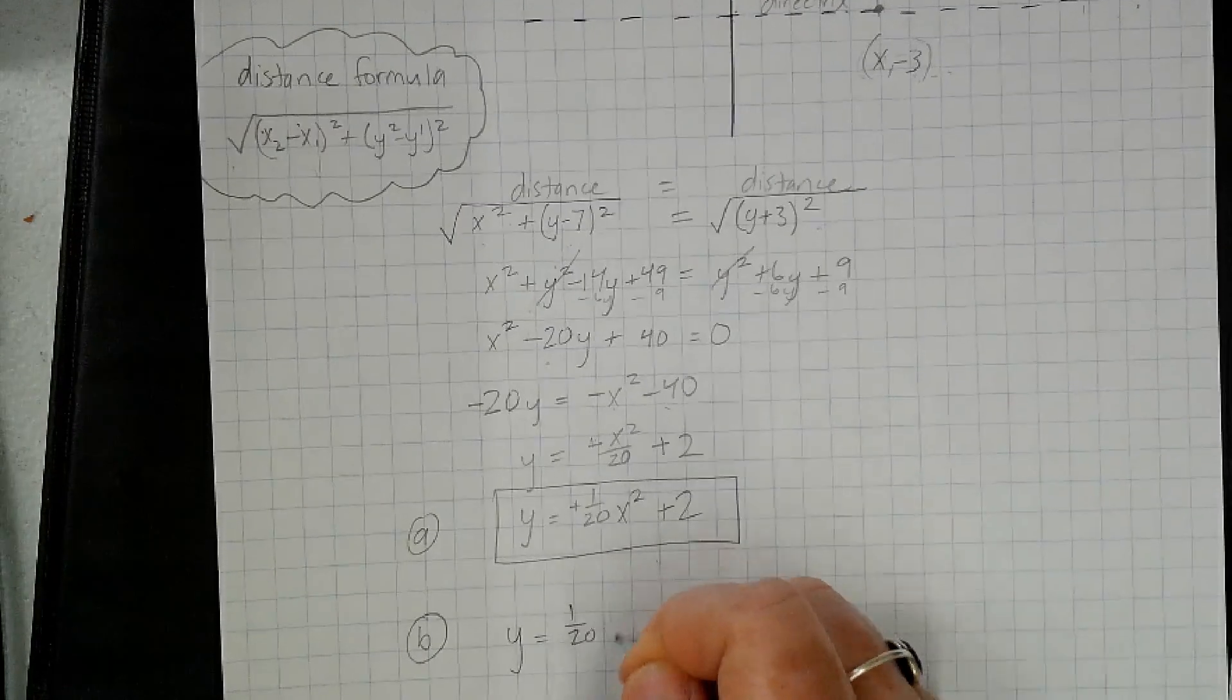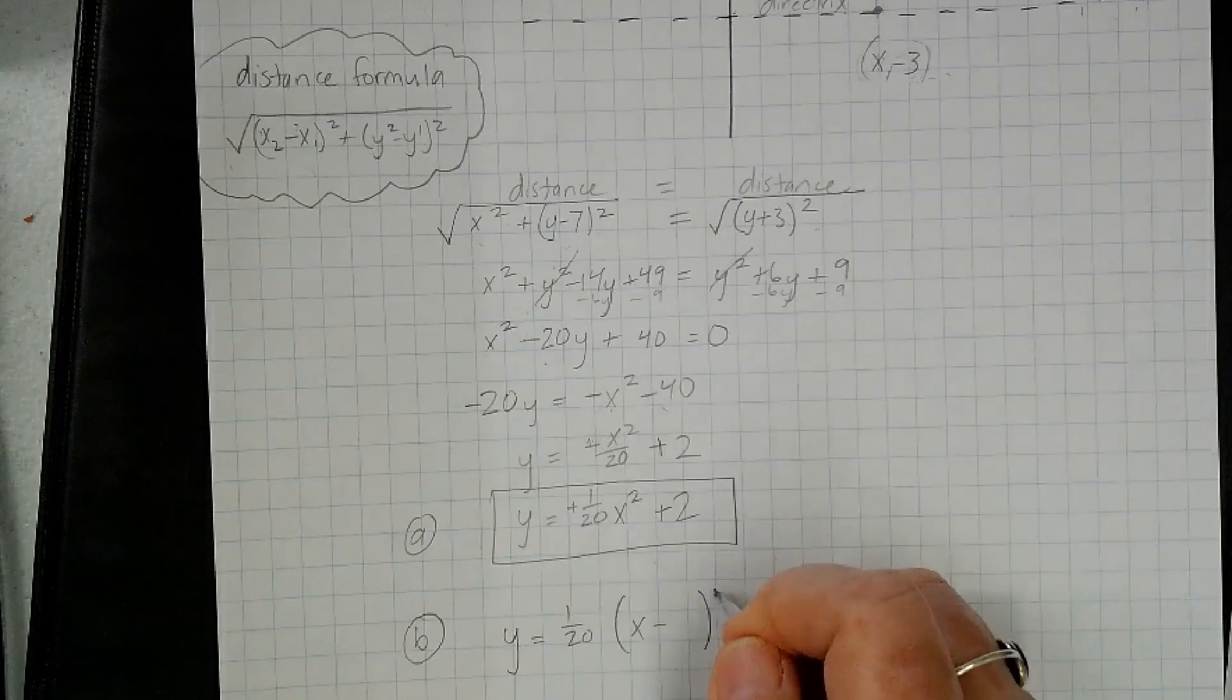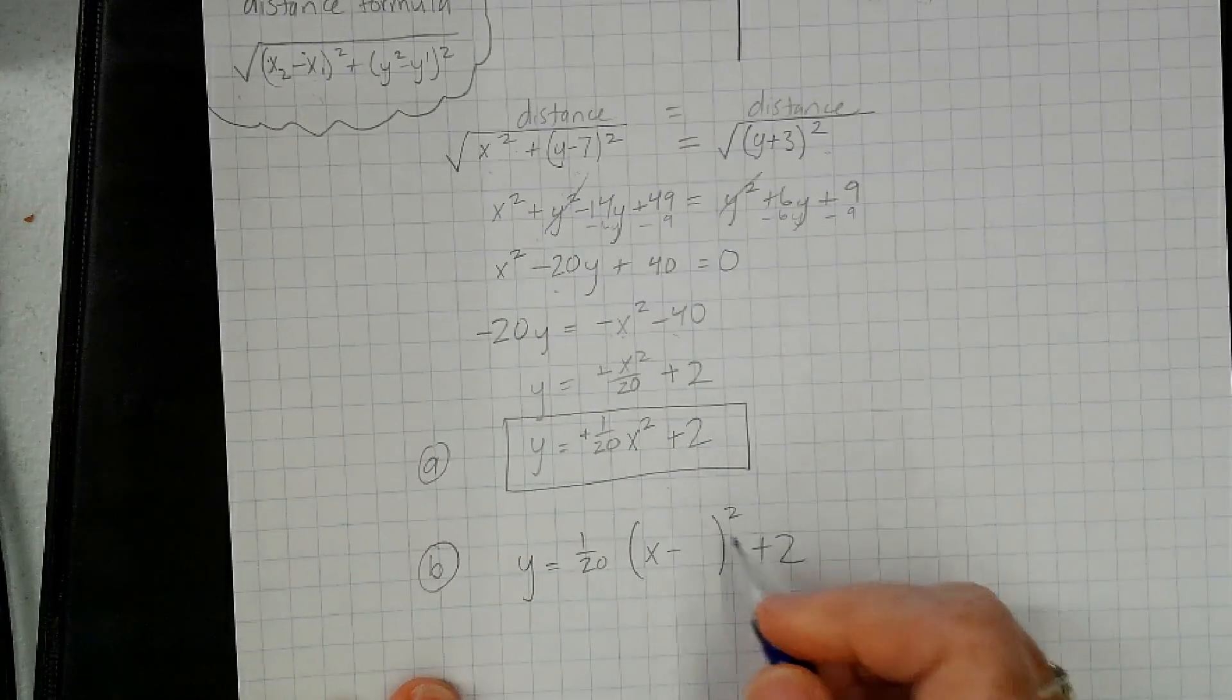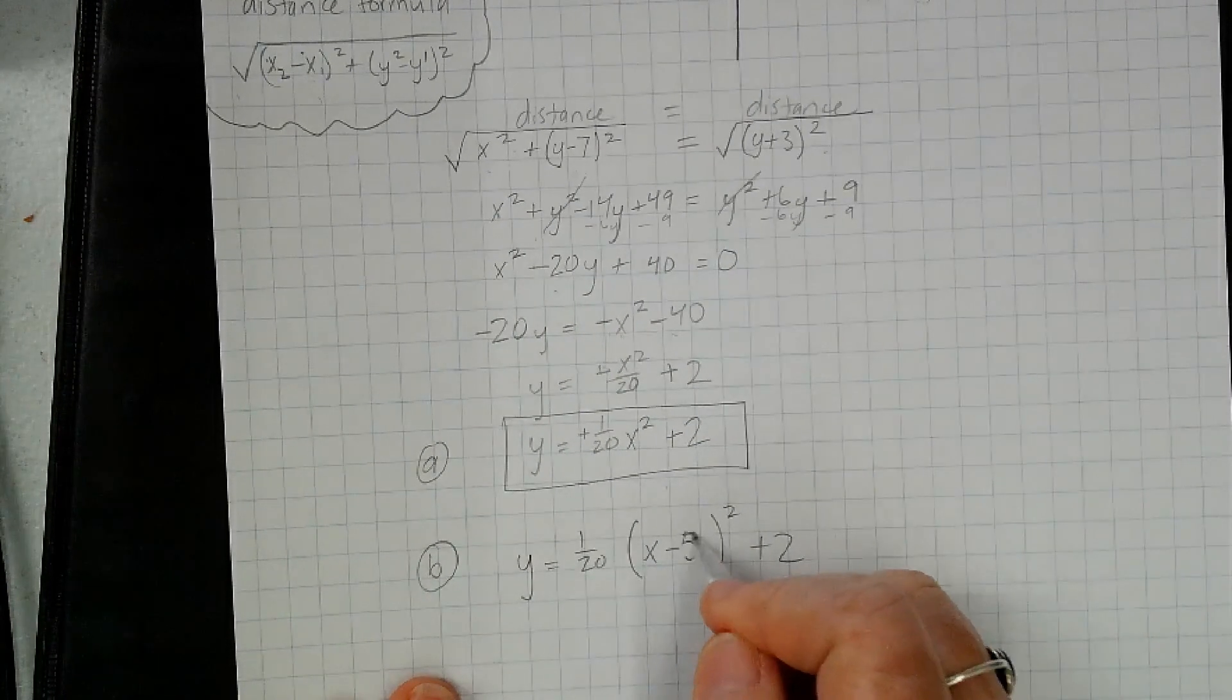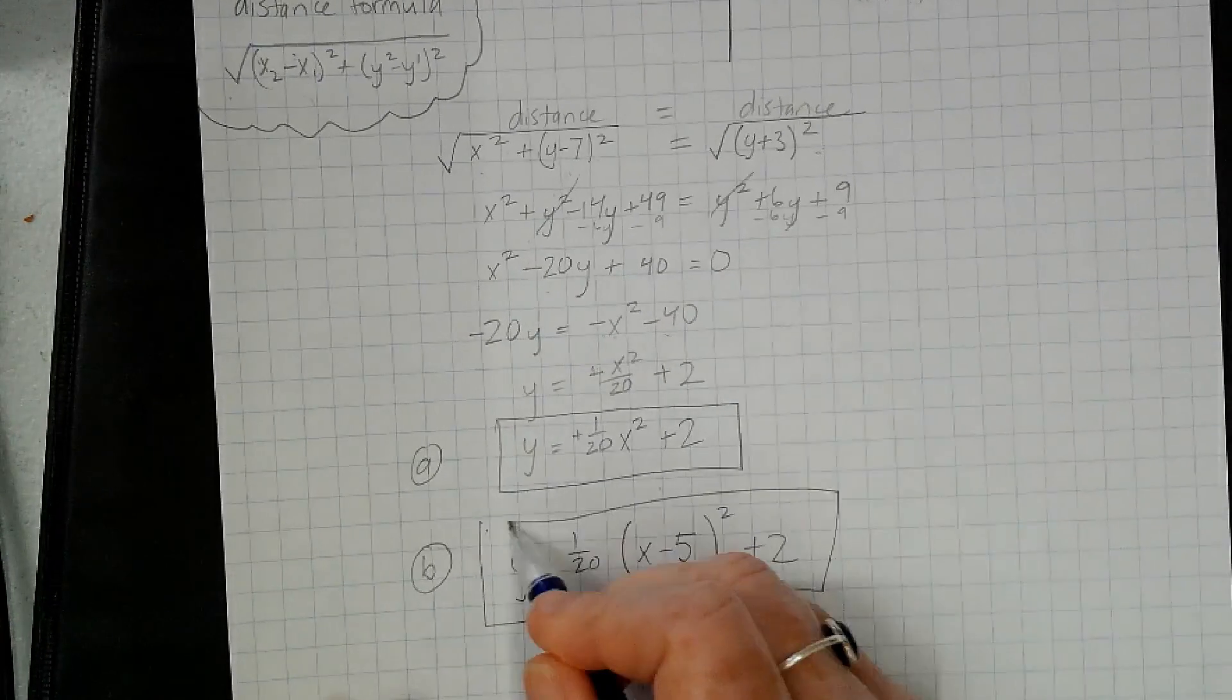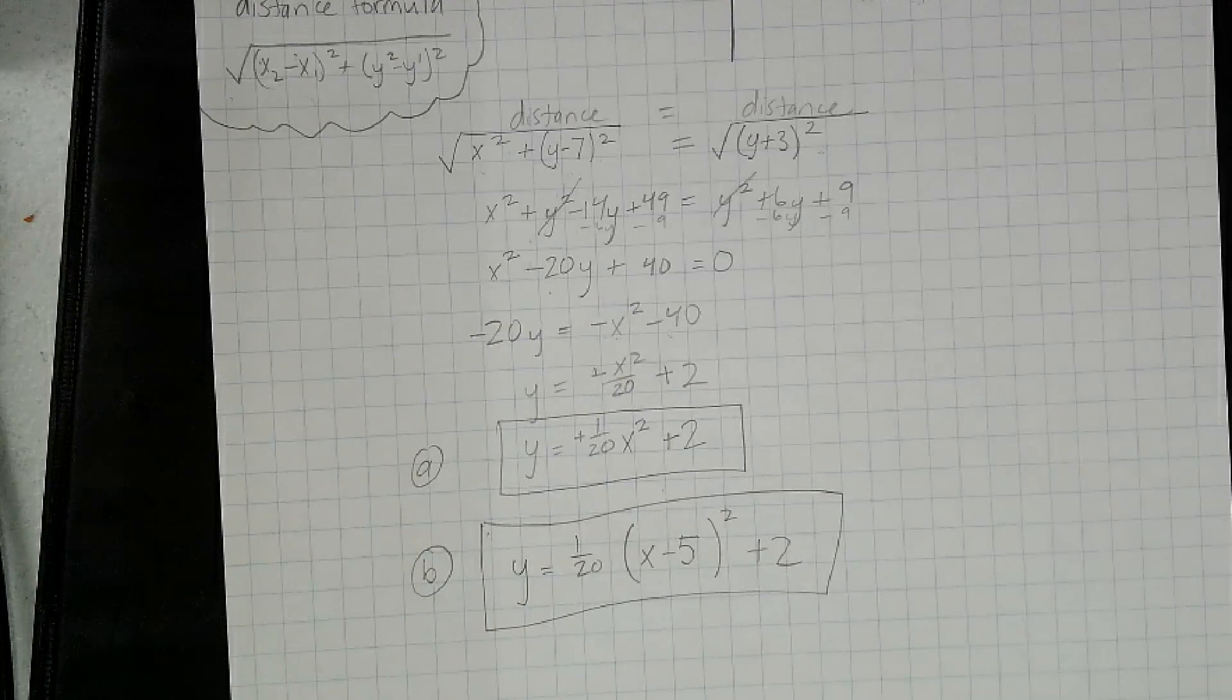5 units to the right, so that's going to be (x - h)². If I want to go right, h is going to be 5, or it's going to be positive, so x minus positive 5. And that's it.